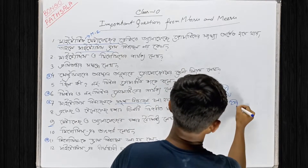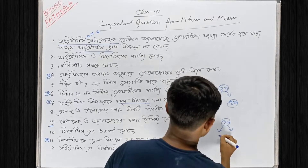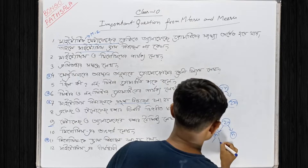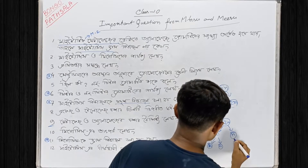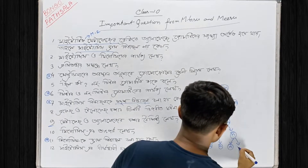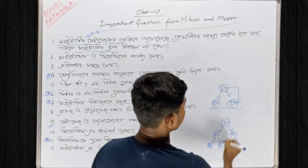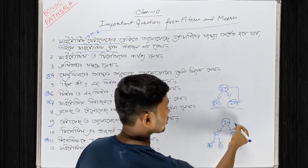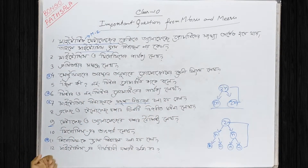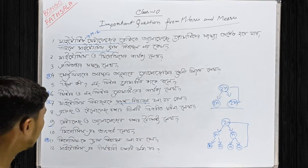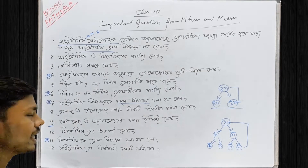What happens when we call the Mitosis division? We call the Mitosis division 2n and 2n number of cells. 2n is equal to 2n. The Mitosis division is equal to 2n number of cells. Then we call the n. Then we call the n for Meiosis.